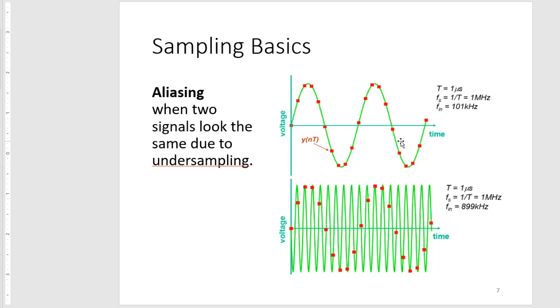After we sample, if we just leave the dots there, they will look practically the same and we won't be able to differentiate. We may never know if it was from a 101 kilohertz signal or an 899 kilohertz signal. Why this happens is more of a topic outside our course, so let's just consider it as a limitation of the sampling process.